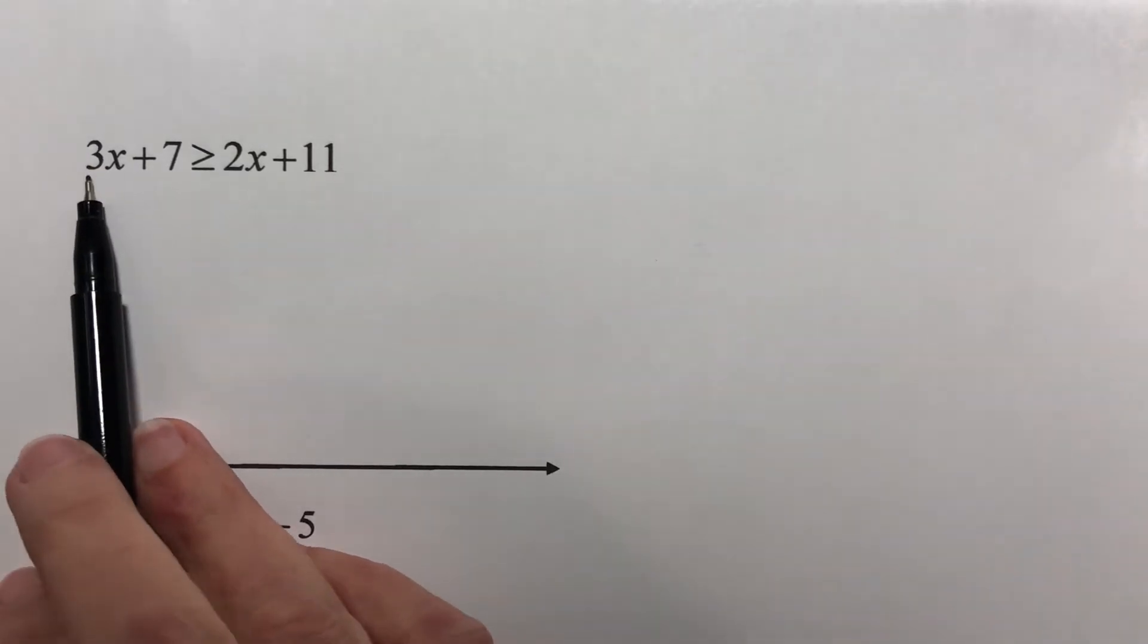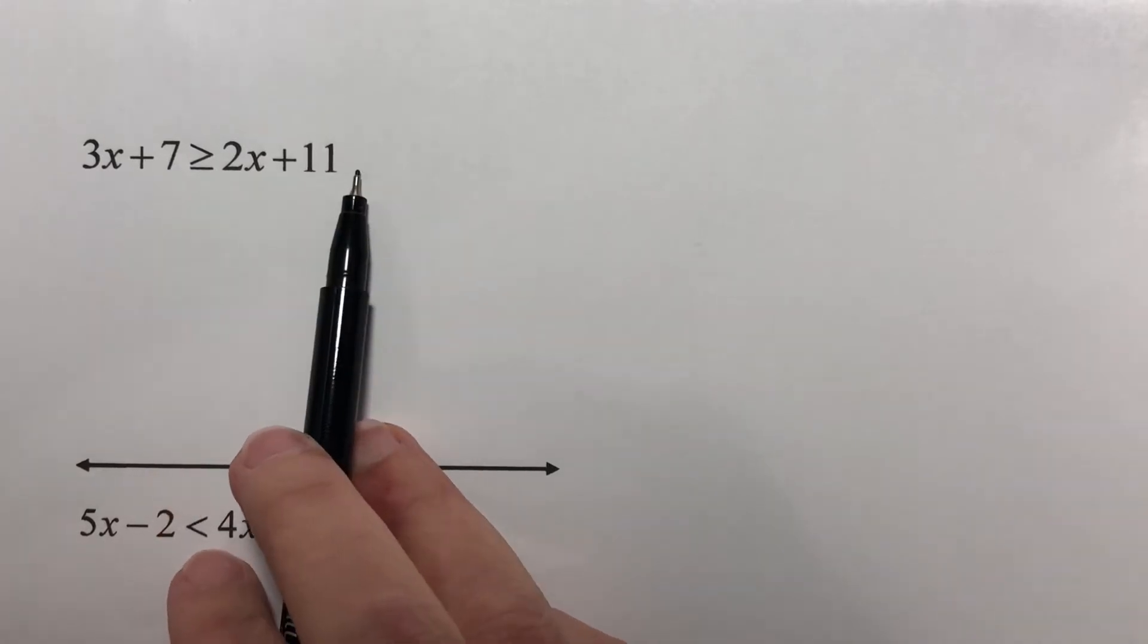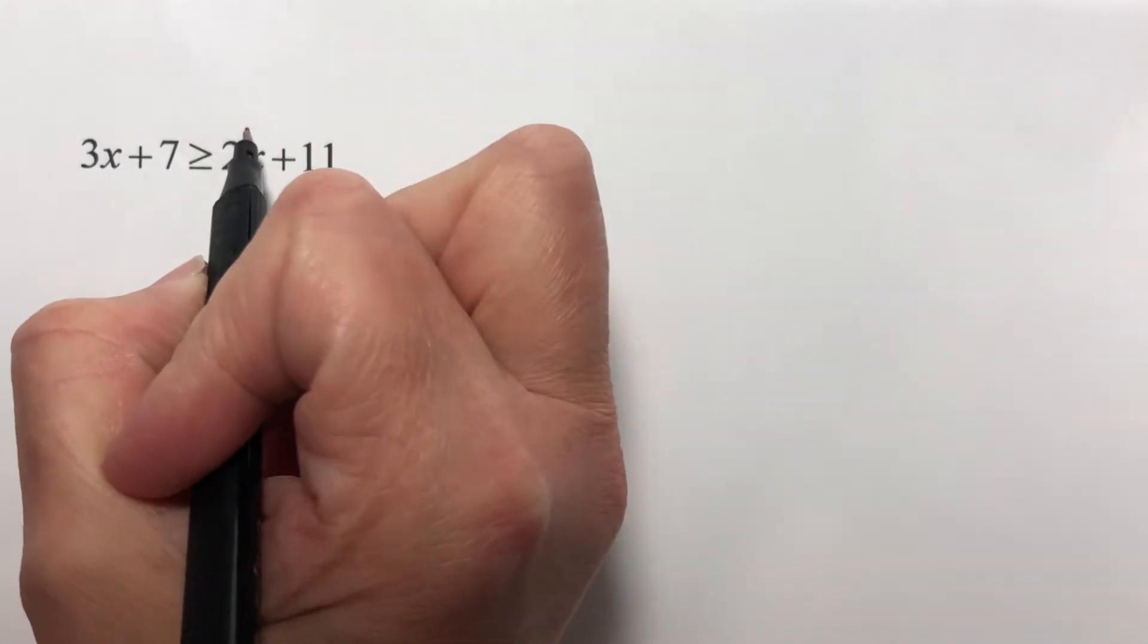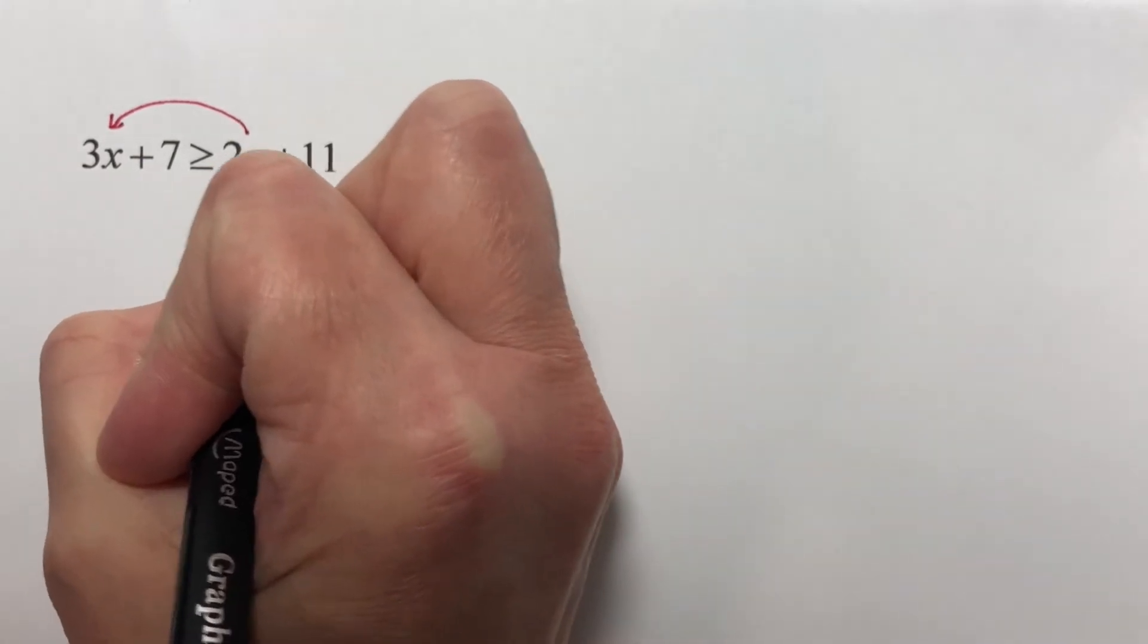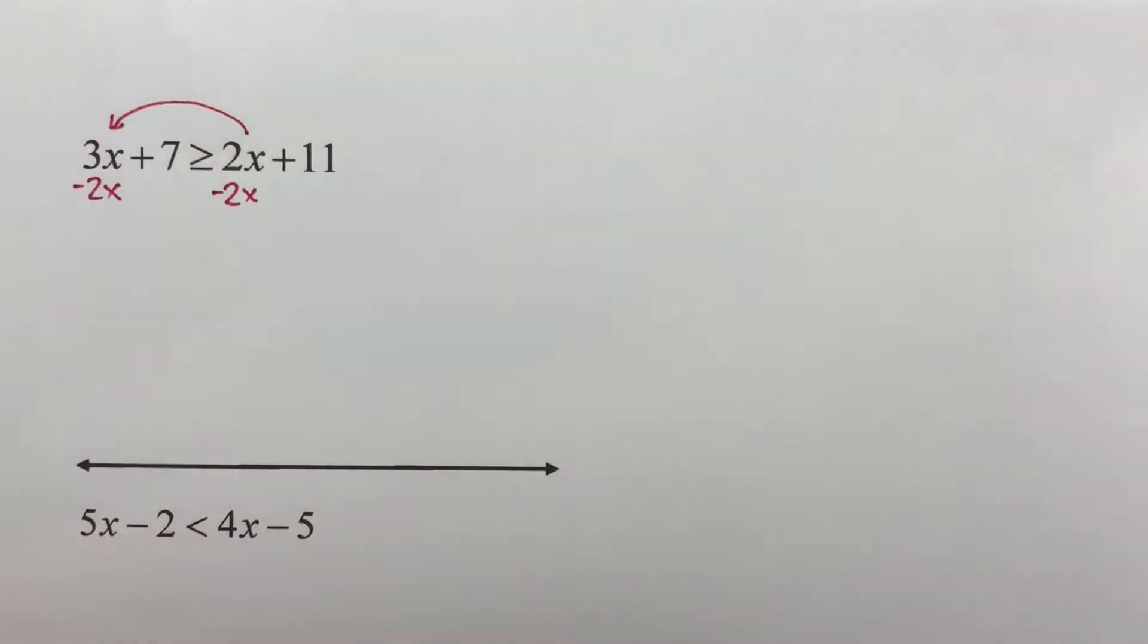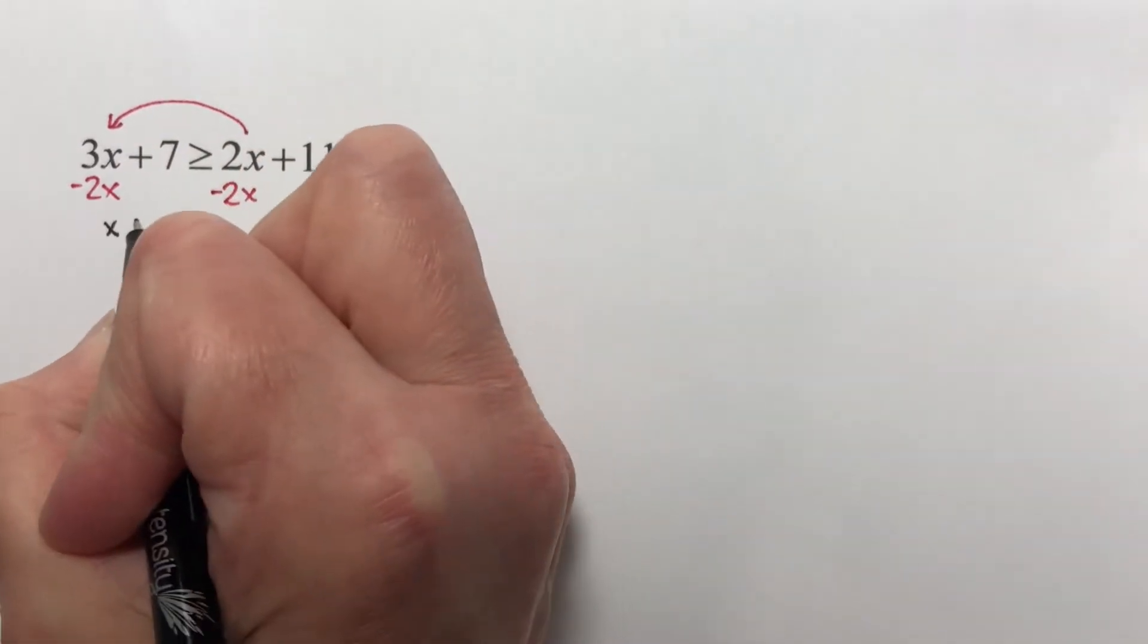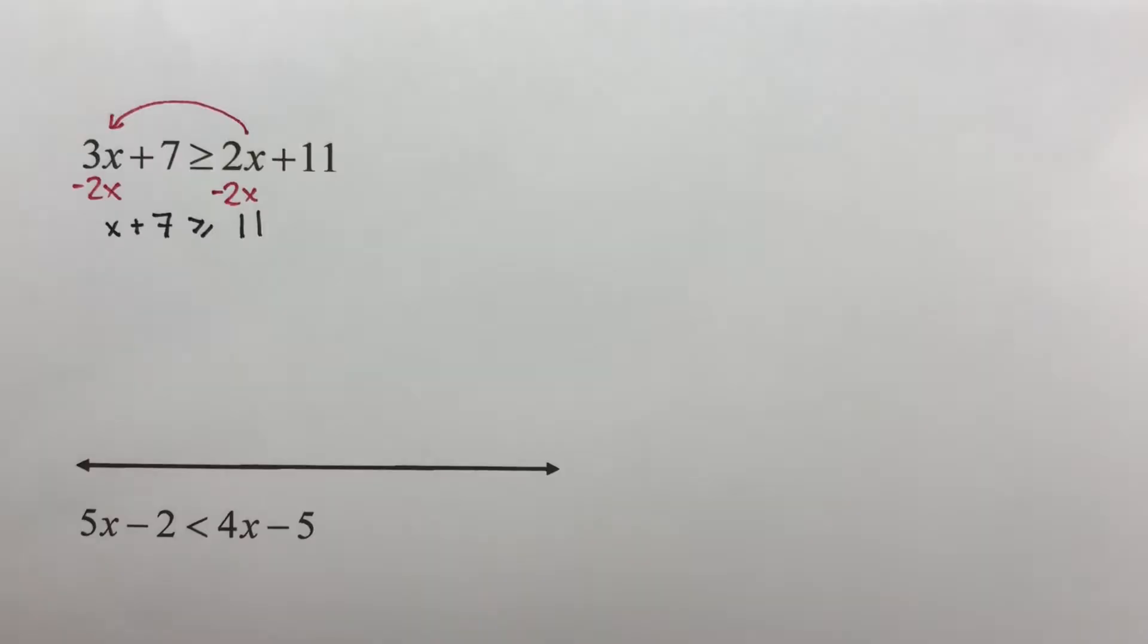I have 3x plus 7 is greater than or equal to 2x plus 11. I am going to work this the same way I would if it were an equal sign. I want to move the 2x over to here, so I subtract 2x from both sides. That gives me 1x, or just x, plus 7 is greater than or equal to 11.